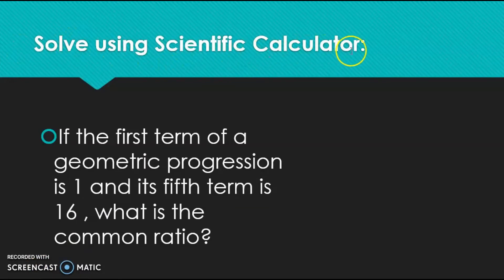Solve using scientific calculator. If the first term of a geometric progression is 1 and its fifth term is 16, what is the common ratio?